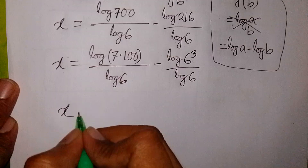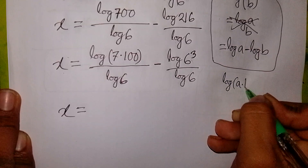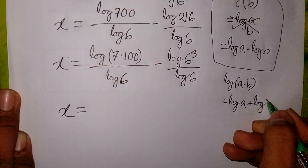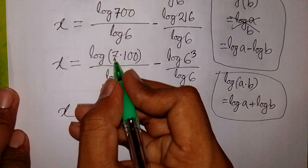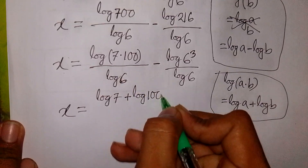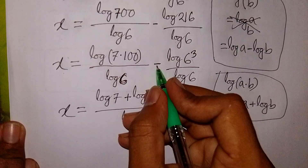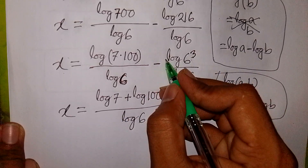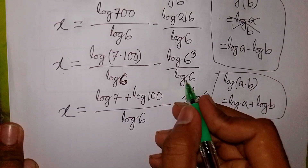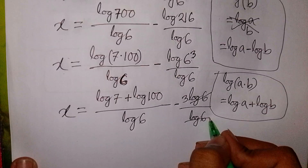Now x will be equal to log of 7 times 100. We apply the formula log of a times b is equal to log a plus log b, so it will be log 7 plus log 100, over log 6. Then here minus, this power 3 will move to the front so it will be 3 log 6, over log 6.